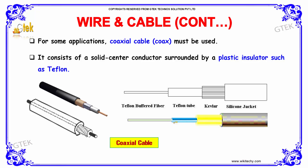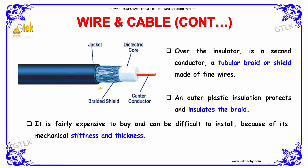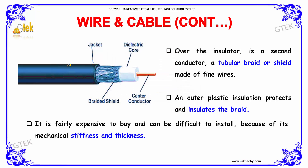The Teflon-buffered fiber is covered with a Teflon tube, covered with Kevlar and a silicon jacket — this is your coax. Over the insulator is a second conductor, a tubular braid or shield made of fine wires. An outer plastic insulation protects and insulates the braid. Coaxial cable is fairly expensive to buy and can be difficult to install because of its mechanical stiffness and thickness.